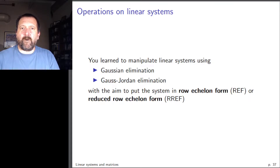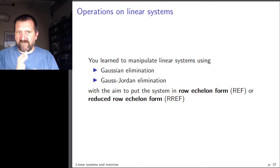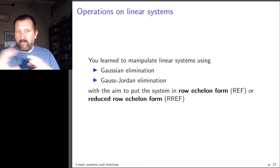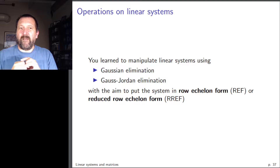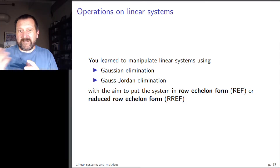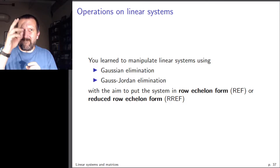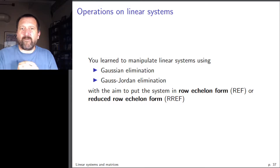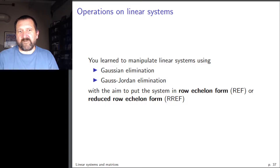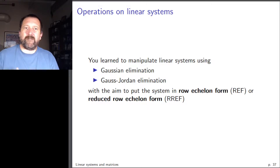What you learned in linear algebra was a variety of operations boiling down to Gaussian elimination or Gauss-Jordan elimination. Gaussian elimination uses elementary row operations to bring the system to row echelon form; Gauss-Jordan goes further to reduced row echelon form. I won't go over this in detail — turn back to your lectures. We might need it from time to time.